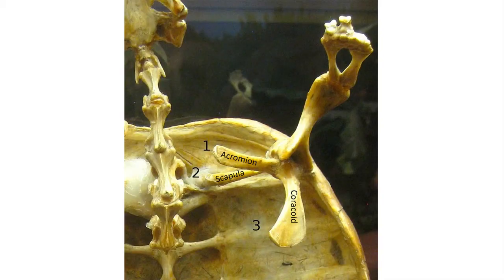The shoulder girdle of turtles is really unusual in that it is composed of three projections or processes that fit inside the shell. The three processes are called the acromion, the scapula, and the coracoid, with the scapula buttressing against the shell, and the junction of the three projections at the glenoid joint with the humerus.